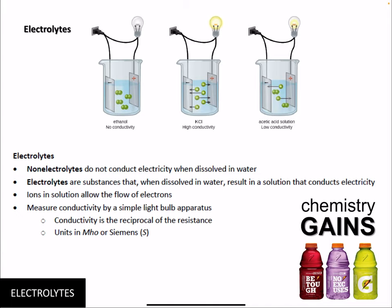When we talk about solutions, we talk about electrolytes, which come down to how much electricity they conduct. A non-electrolyte does not conduct electricity when dissolved in water — for example, ethanol in water doesn't conduct electricity. Potassium chloride, on the other hand, has high conductivity, making it an electrolyte. These substances, when dissolved in water, produce ions like the positively charged potassium ion and negatively charged chloride ion, which allow electrons to move and conduct electricity.